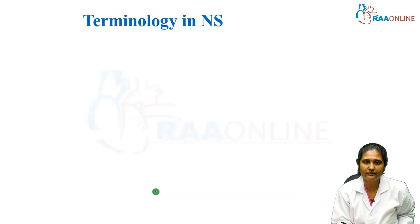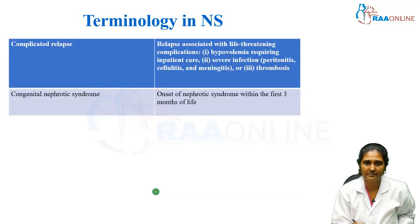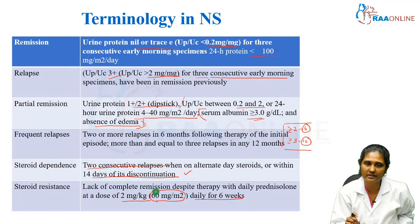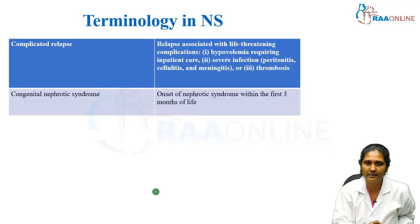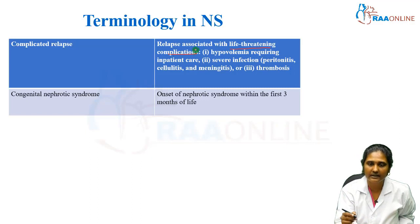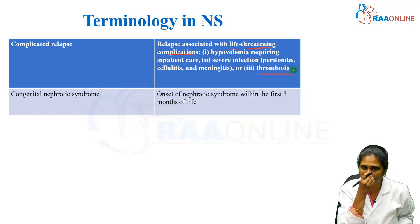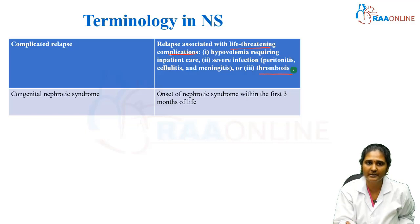Next, coming to the next set of terminologies — that is complicated relapse. When you call it as a complicated relapse: relapse is protein dipstick 3 plus or 4 plus, or protein creatinine ratio 2 milligram per milligram, in 3 consecutive samples. When this relapse is associated with life-threatening complications — like the child may have hypovolemia requiring inpatient care, or the child showing severe infection in the form of peritonitis, cellulitis or meningitis, or the child presenting with thrombosis — if any one of these is present, then it is considered to be a complicated relapse.